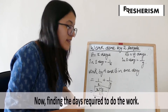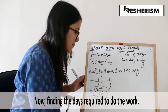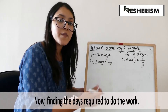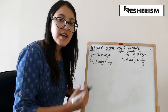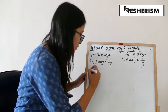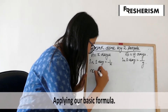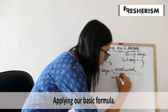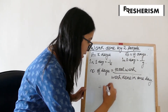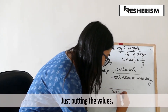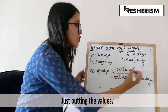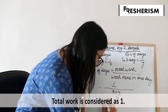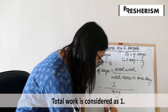Now, let us find what will be the number of days to complete this work by both A and B together. We know that whole work equals number of days required to complete the work multiplied by work done in one day. Hence, the total number of days required will be total work upon work done in one day. Since work done in one day is x plus y upon xy and total work is 1, the number of days required to complete the work will be xy upon x plus y.